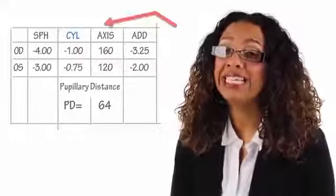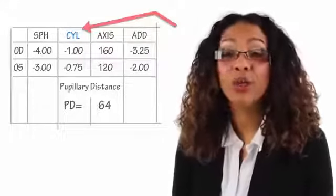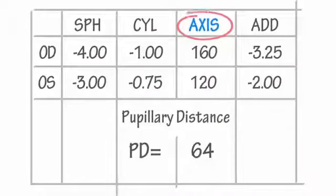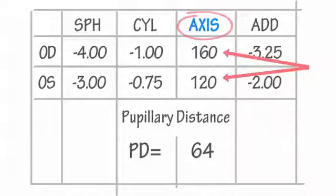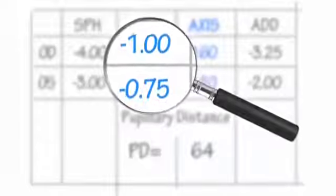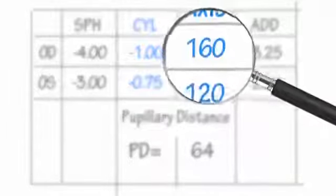Now these next terms won't always be seen on your prescription — it just depends if you have astigmatism. Astigmatism is a visual condition where the eye isn't completely spherical, but it's shaped more like a football. So if you do have astigmatism, you'll see CYL, which is the degree to which your eye is shaped like a football. And you'll also see axis, which represents where the vision is blurred, from 1 to 180 degrees.